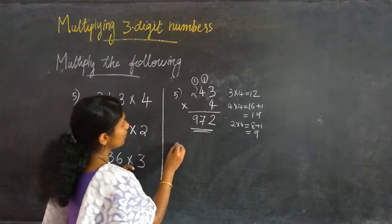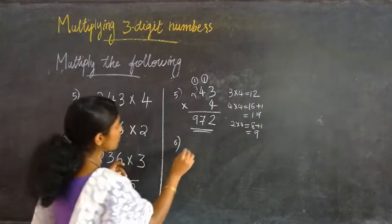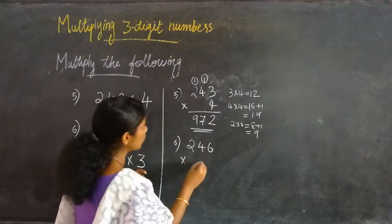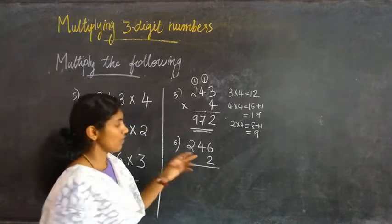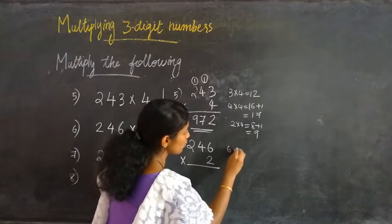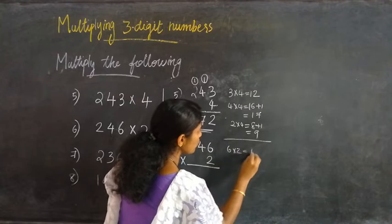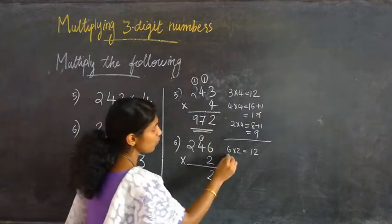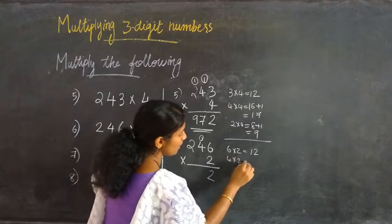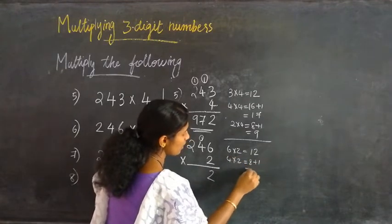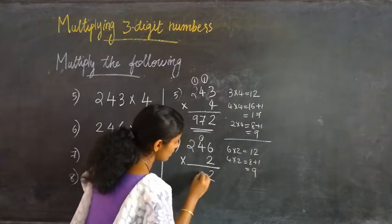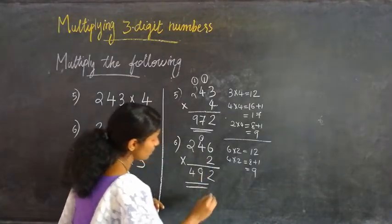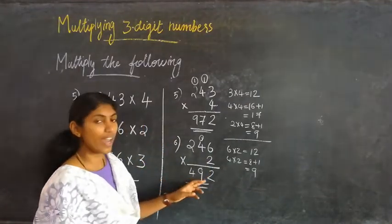Then the 6th question: 246 into 2. First, 6 into 2 equal to 12. Writing 2 here and 1 is carried over. Then 4 into 2 equal to 8, plus 1 is 9. Writing 9 here. Then 2 into 2 is 4. So we got the answer 492.